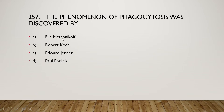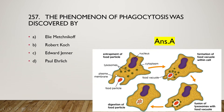The next question: the phenomenon of phagocytosis was developed by Elie Metchnikoff, Robert Koch, Edward Jenner, or Paul Ehrlich? The right answer is option A, Elie Metchnikoff. The phagocyte engulfs food particles, bacterial cells, or any kind of pathogen that enters the body, forming a vacuole and digesting that particle internally. This process is called phagocytosis.